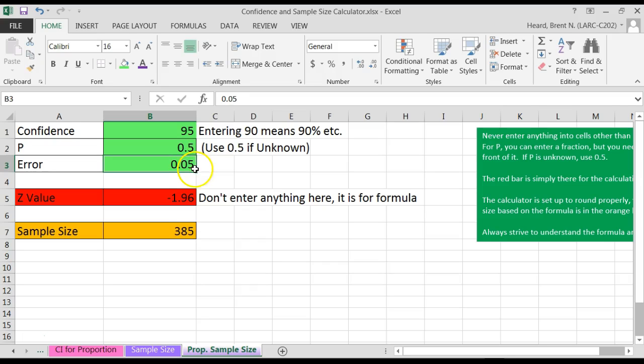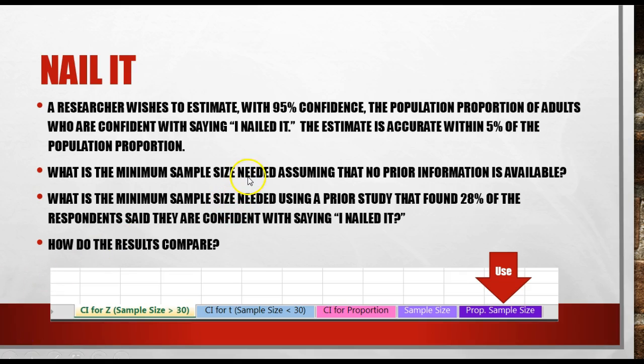The error within 5%, 5% in decimal form is 0.05. Click the enter button, I need a sample size of 385. So I got that sample size because it says assuming no prior information is available, so I used 0.5.